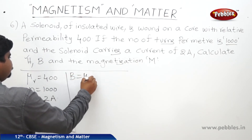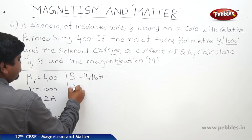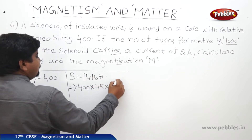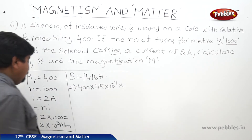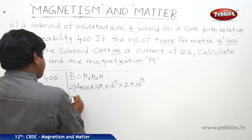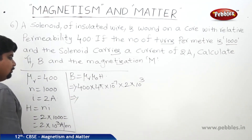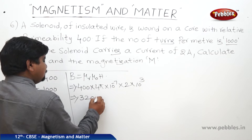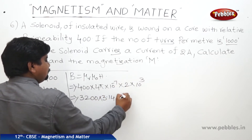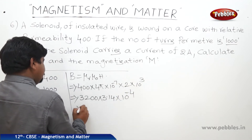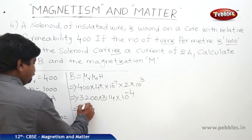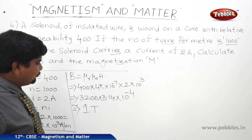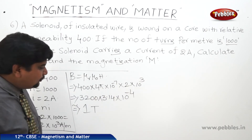B is equal to mu_R × mu_0 × H. Substituting: mu_R is 400, mu_0 is 4π×10⁻⁷, and H is 2×10³. We get 400×4×2×π×10⁻⁴, which is 3200×3.14×10⁻⁴, approximately 10,000×10⁻⁴, giving B ≈ 1 tesla.